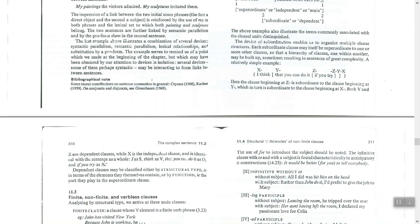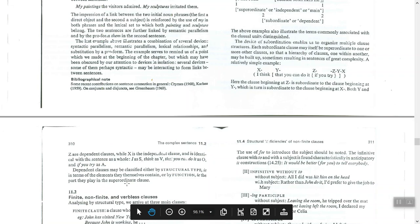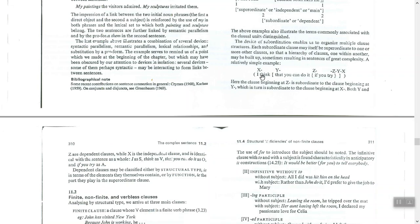Both Y and Z are dependent clauses, while X is the independent clause and is identical with the sentence as a whole. The whole sentence 'I think that you can do it if you try' follows the pattern SVOA: 'I' is subject, 'think' is verb, 'that you can do it' is object, and 'if you try' is adverbial. So as a whole sentence it is SVOA — the same pattern discussed in Chapter 7.